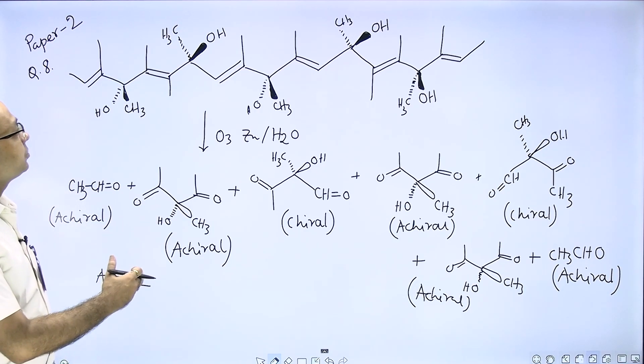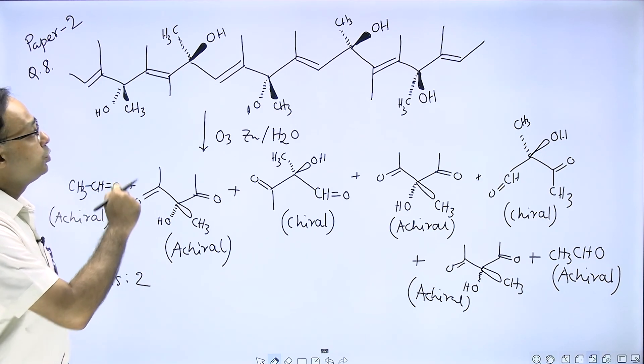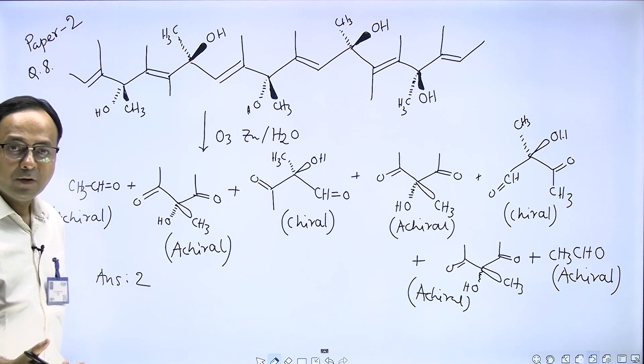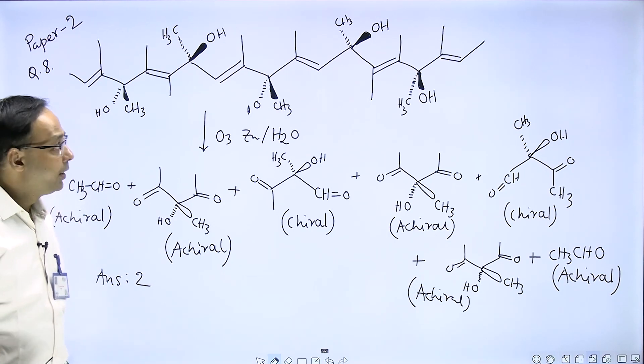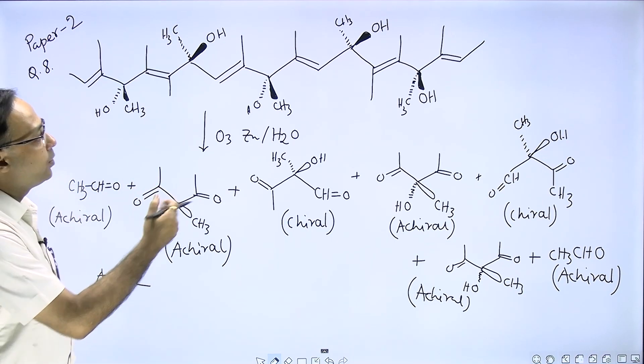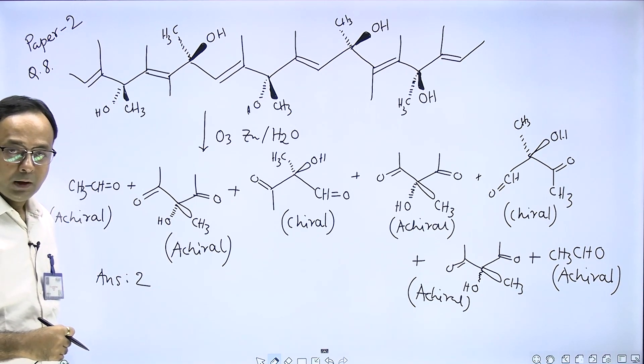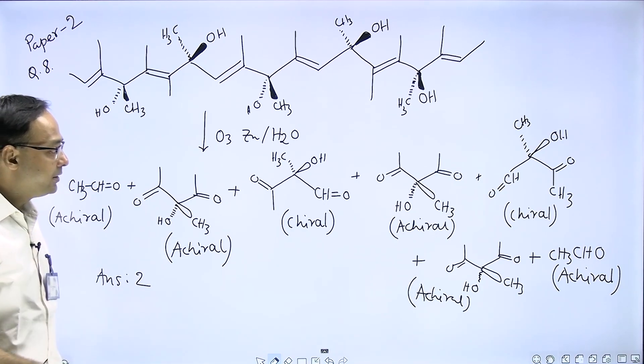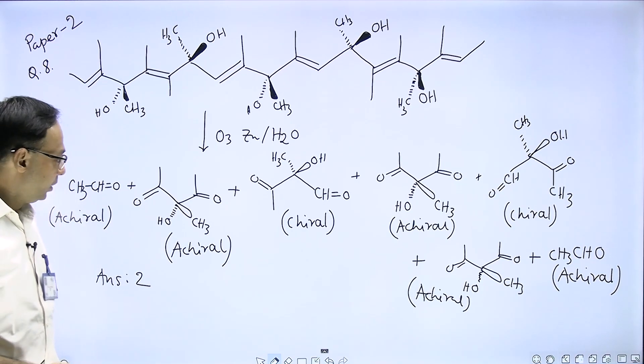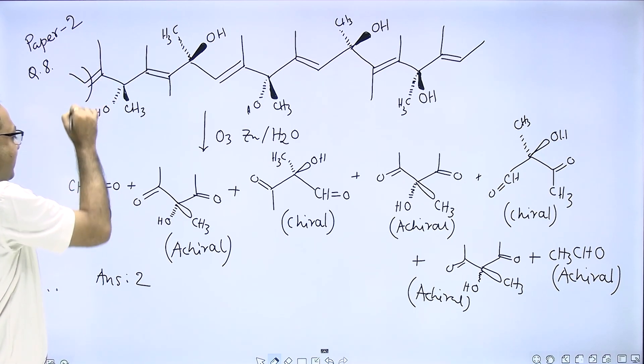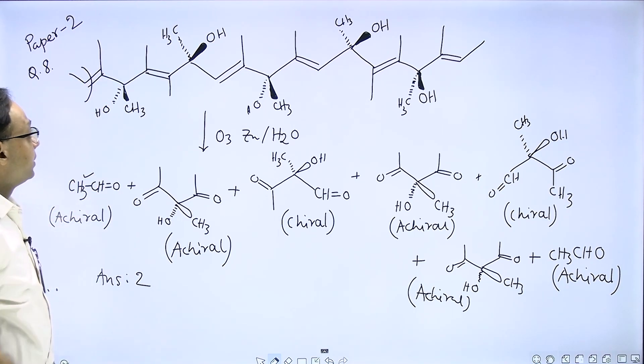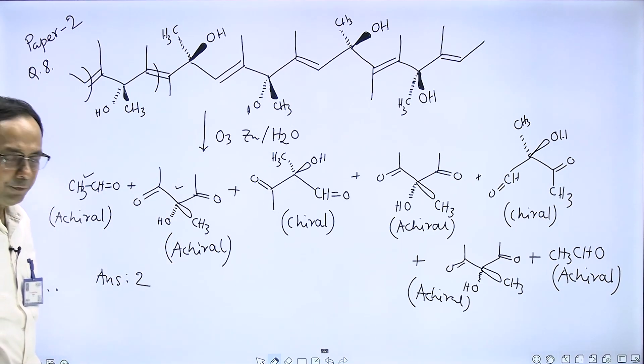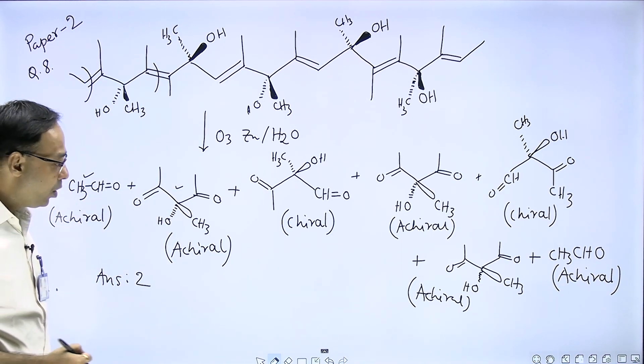This question is based on ozonolysis of hydrocarbon, which is an example of carbonyl formation. There are many double bonds present. This entire compound when treated with ozone forms acetylaldehyde, acetylaldehyde, and a diketone - different products are formed. Acetylaldehyde is an achiral molecule, diketone is an achiral molecule.